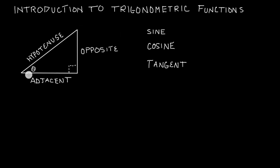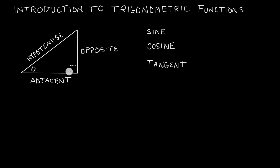Before I start talking about these functions, let's go ahead and look at this right triangle. All three of these functions can be thought of as some sort of relationship between an angle and the sides of a right triangle. This dashed line is a 90 degree angle, and the side that's always opposite of the 90 degree angle is the side we call the hypotenuse.